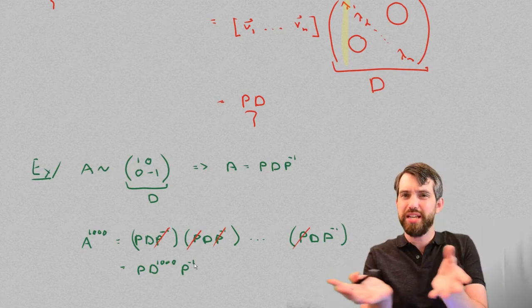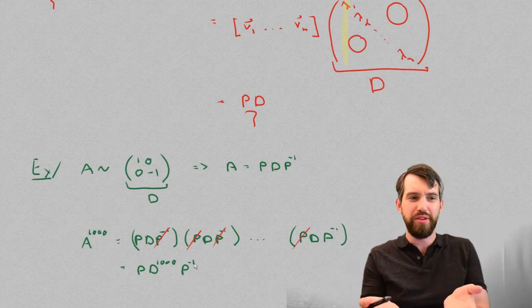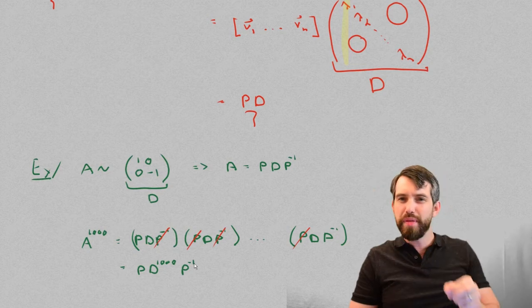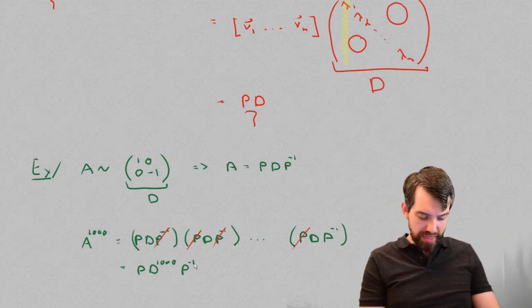But multiplying the diagonal matrix together is really easy. Multiplying diagonal matrices, it's just the powers along that main diagonal will get raised to the power of 1,000.